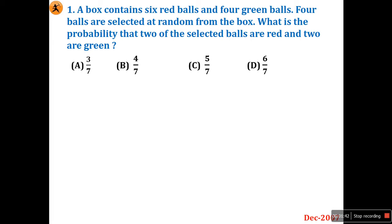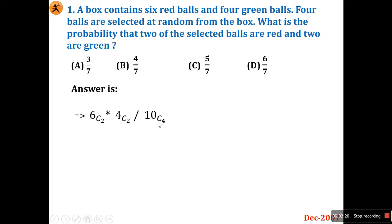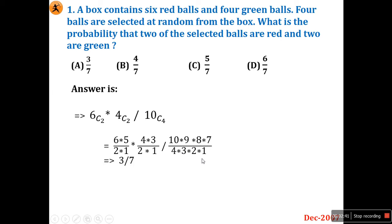Out of six red balls and four green balls, they are selecting four balls. Find the probability that two belong to red and two belong to green. The calculation is 6C2 times 4C2 divided by 10C4. That is (6×5)/(2×1) times (4×3)/(2×1) divided by (10×9×8×7)/(4×3×2×1), giving a final answer of 3/7.